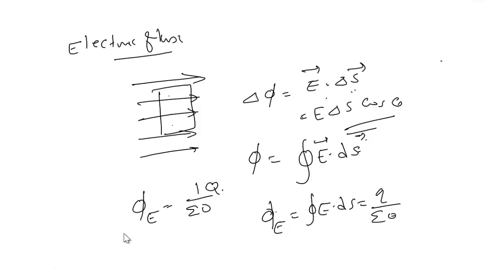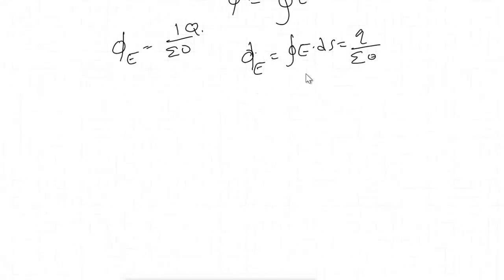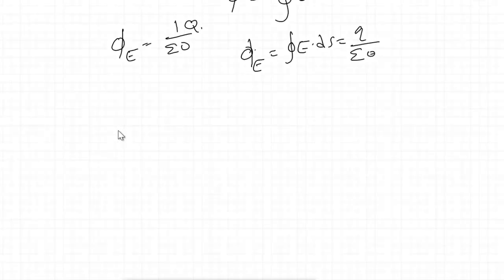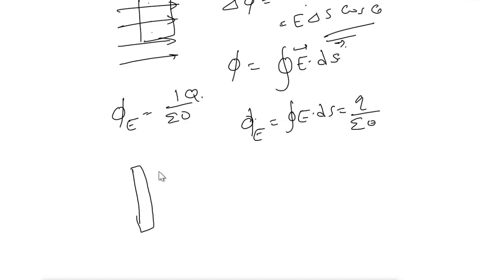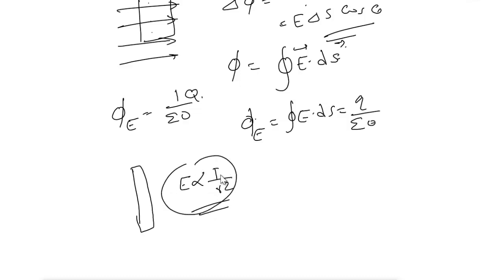Gauss's theorem — flux φ_E = ∮E · dS = q/ε₀ — is very important. It is applicable for symmetric charge distributions, such as a long straight conductor, a plane sheet of charge, or a spherical surface. Gauss's theorem is based on the inverse square dependence of E on distance, i.e., E ∝ 1/r².